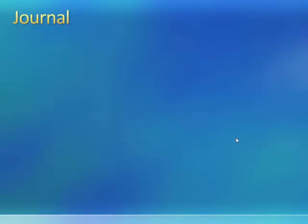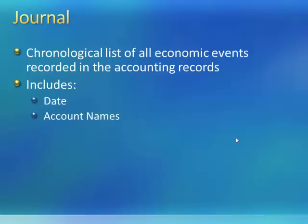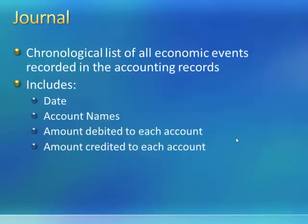Next, we want to look at the journal. The journal is a chronological list of all economic events that are recorded in the accounting records. The journal includes the date of the transaction, the account names affected by the transaction, the amount debited to each account, the amount credited to each account, and a description of the transaction.